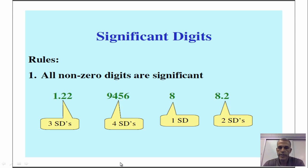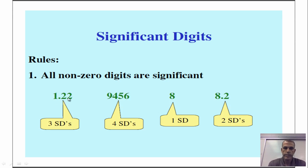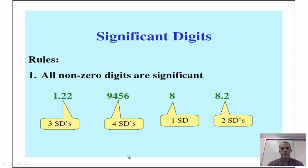Rule number one: all non-zero digits are significant. Anything that's not a zero is going to be a significant figure or digit. As you can see here, you have 1.22 — three digits — then four digits, one digit, and two digits. Pretty straightforward. If it's not a zero, it's a significant figure.